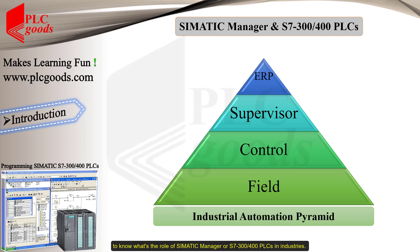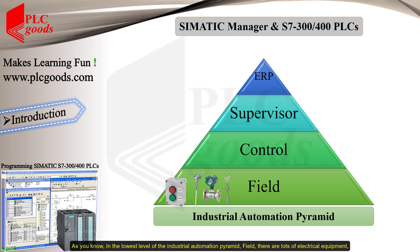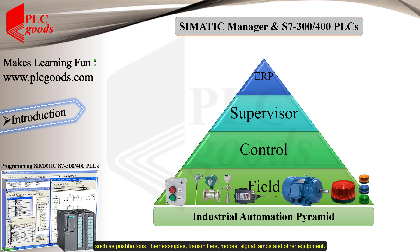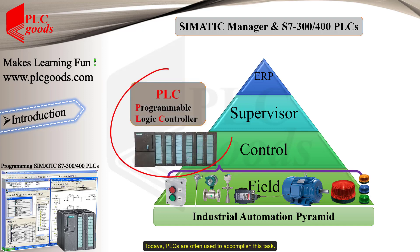Let's start the video with the industrial automation pyramid to understand the role of SIMATIC Manager and S7-300/400 PLCs in industries. In the lowest level of the industrial automation pyramid field, there are lots of electrical equipment such as push buttons, thermocouples, transmitters, motors, signal alarms, and other equipment. Naturally we can't check all of them simultaneously and continuously.